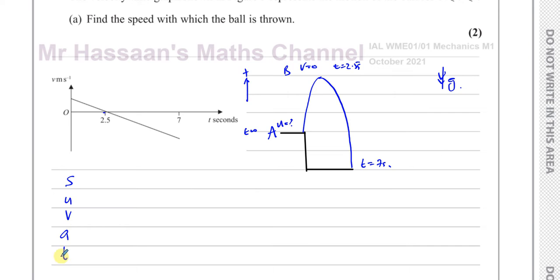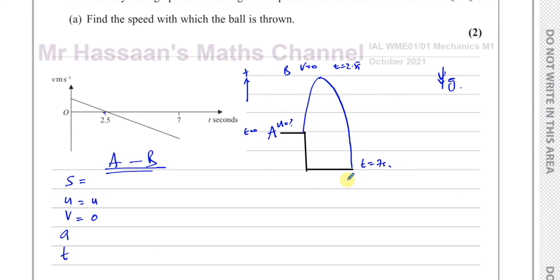We put all the information into the SUVAT equations. We know this is constant acceleration due to gravity. We don't know the displacement between A and B, but we have to find the initial velocity U. We know the final velocity — considering the journey between points A and B — the final velocity at B is 0, because that's when it reaches the top of its flight. The acceleration is negative 9.8 because they've taken up as positive, giving a negative gradient on the graph. The time is 2.5 seconds.